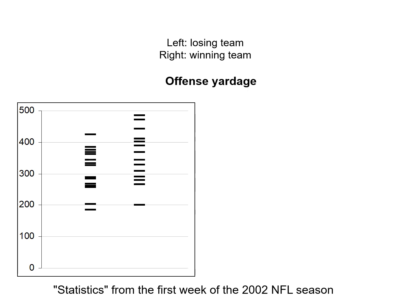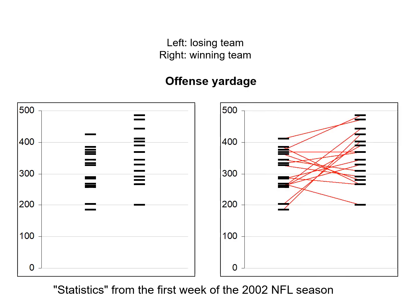What about offensive yardage? Maybe this is the statistic that determines winners or losers. In this case we have a very similar-looking pattern where losers tend to have smaller values than winners. But when we connect the pairs, we actually have some cases where there are negative slopes — this team had fewer offensive yards than the team it beat. So offensive yardage is working very differently from points in terms of its relationship between winners and losers.